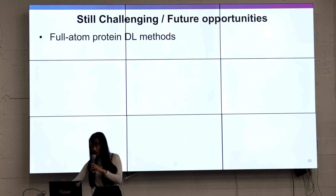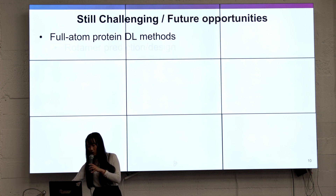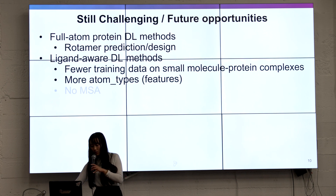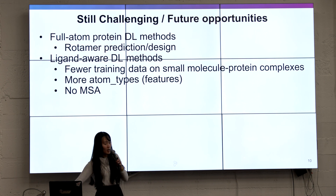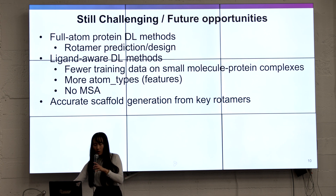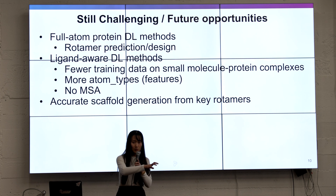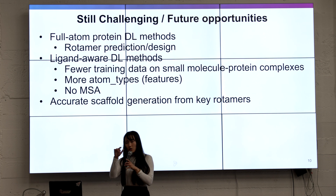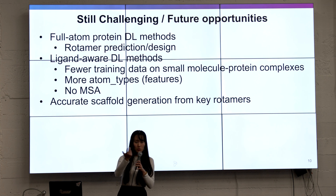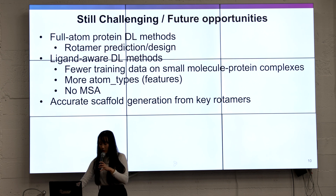For future work: we should do full-atom deep learning design, which can understand rotamers for more accurate rotamer placement. We're also working on ligand-aware deep learning design, which is more challenging because we have limited data and no co-evolution data. And currently, a more interesting method would be to start with the interaction to the ligand and then build a scaffold around it, which technically should work better.